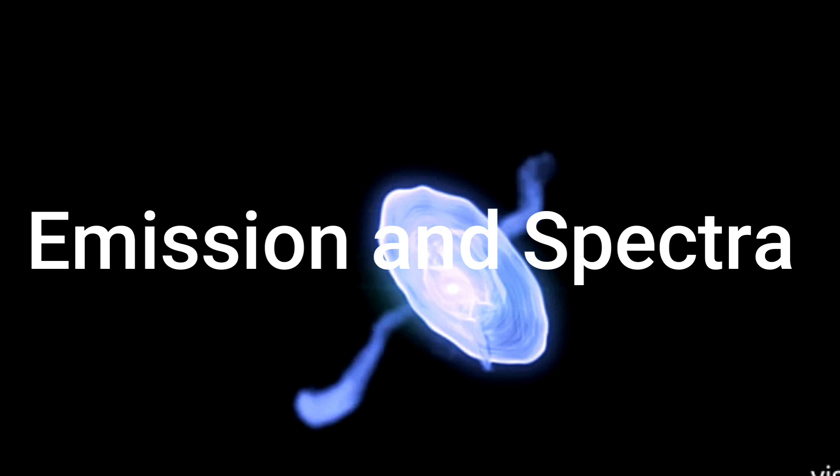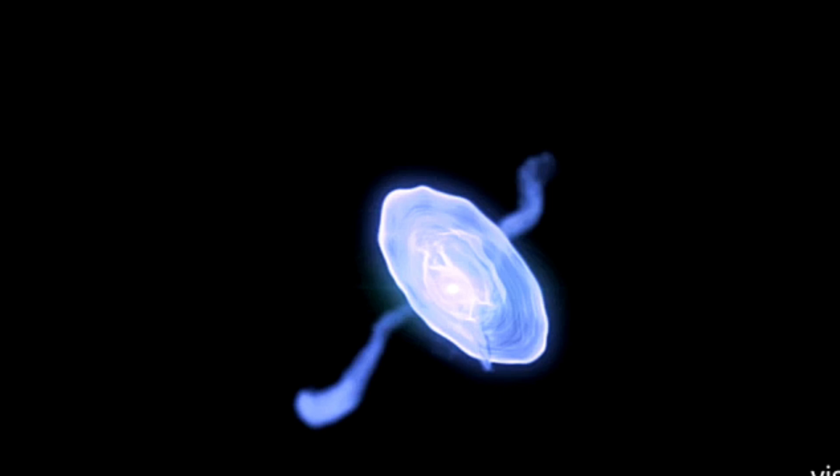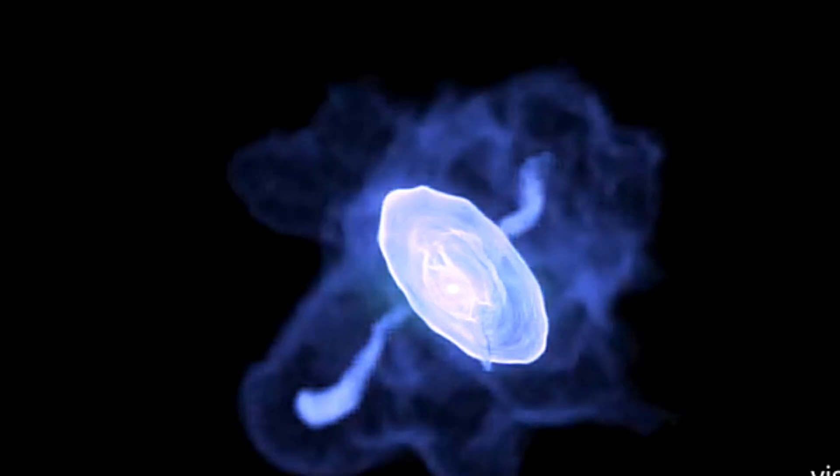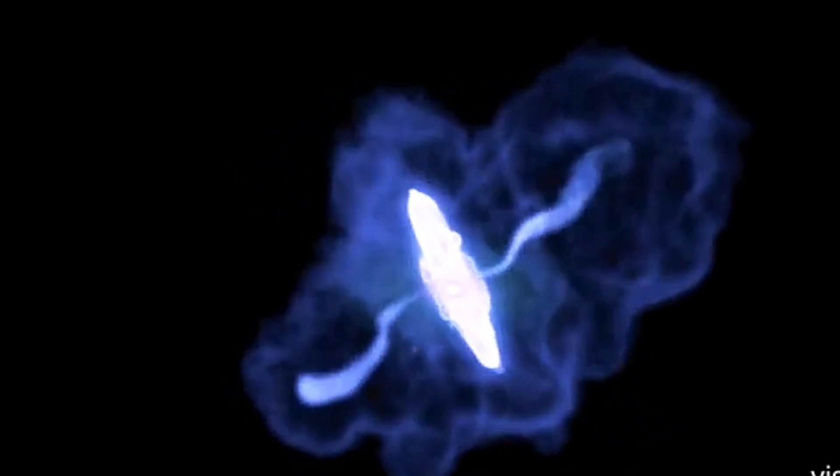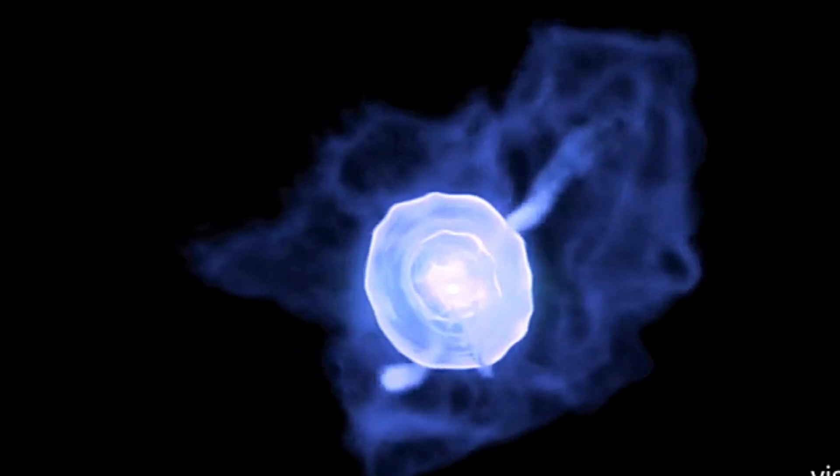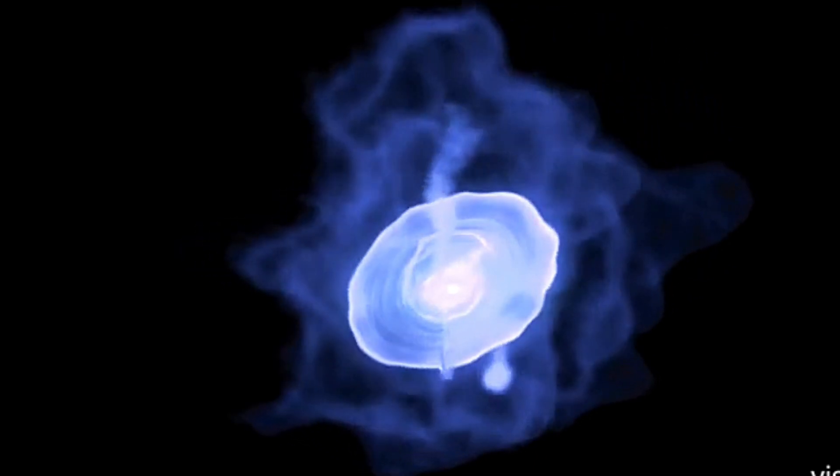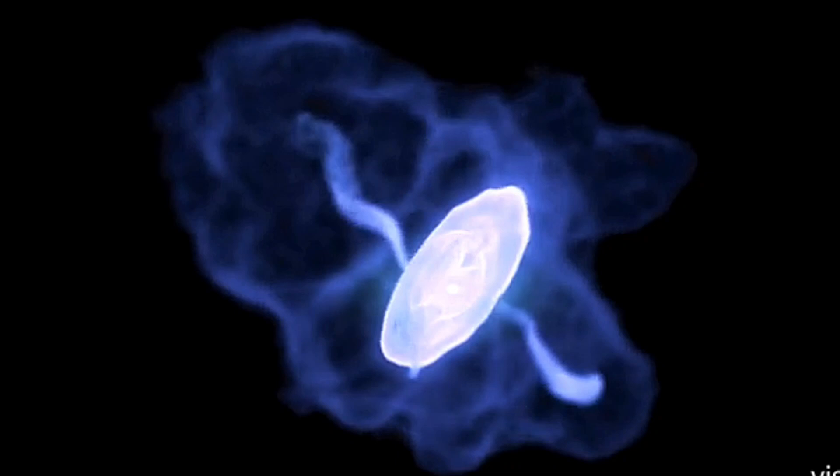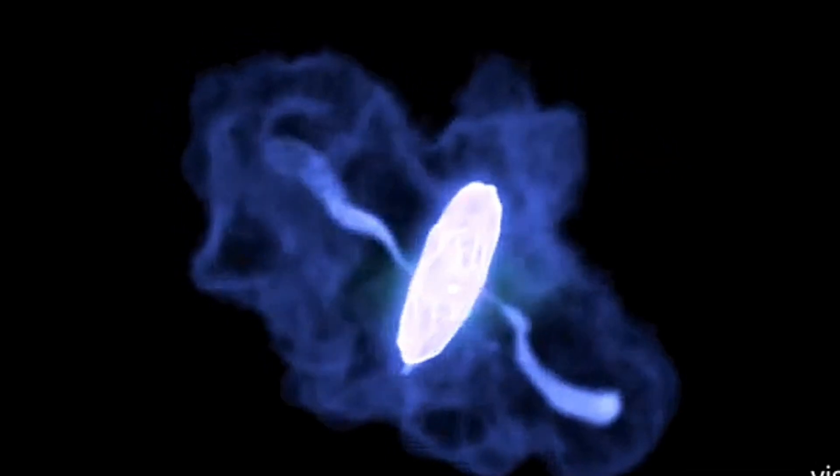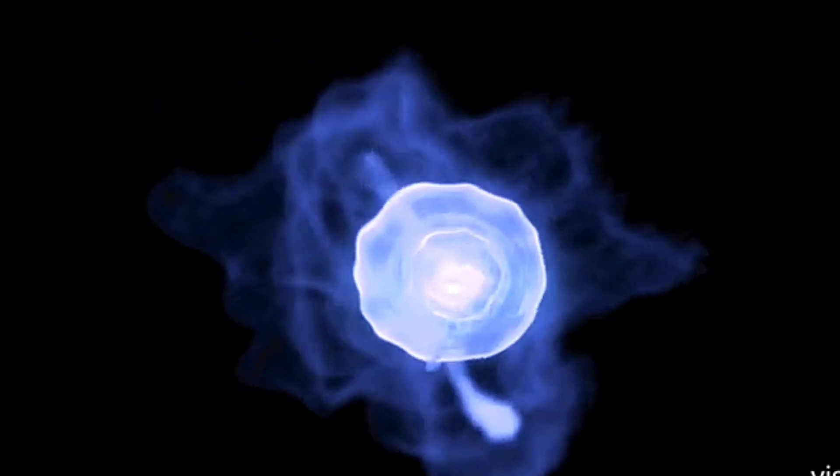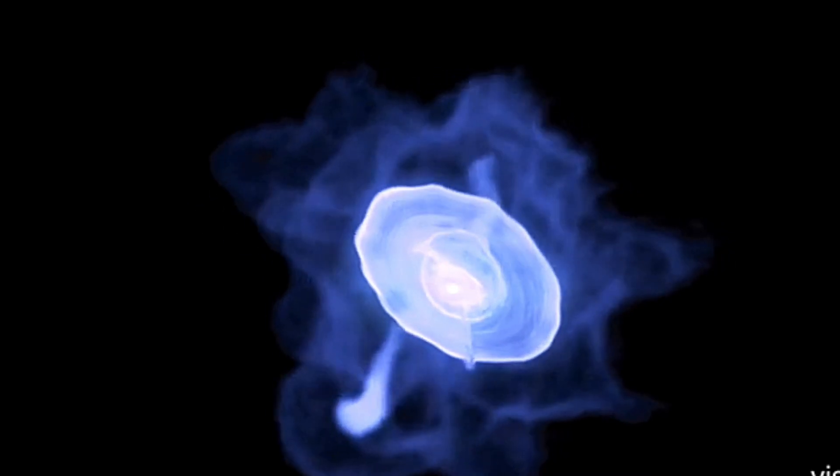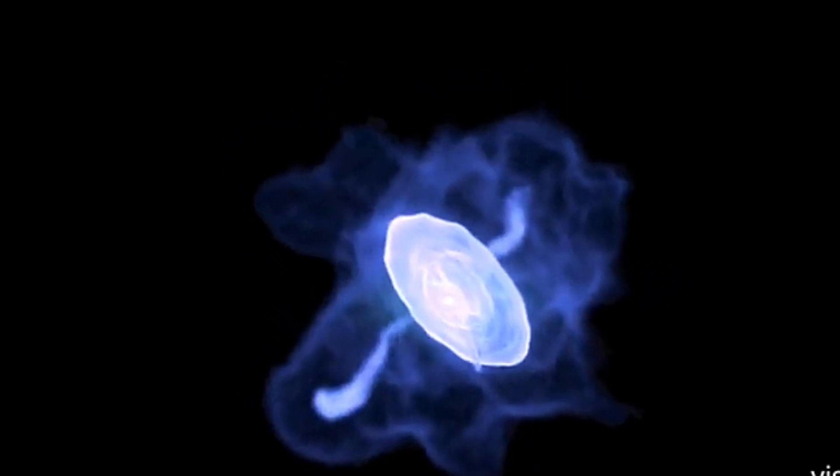The Crab Nebula emits across the entire electromagnetic spectrum, from radio waves to gamma rays. Its emissions are predominantly synchrotron radiation, produced by high-energy electrons spiraling along magnetic field lines. The nebula's complex spectra have provided insights into various physical processes, including particle acceleration and magnetic field interactions.